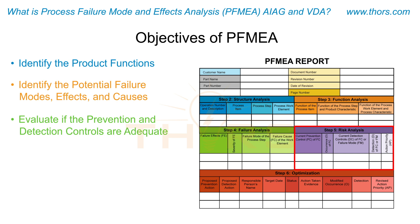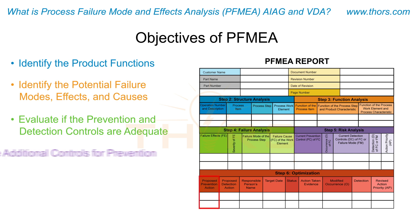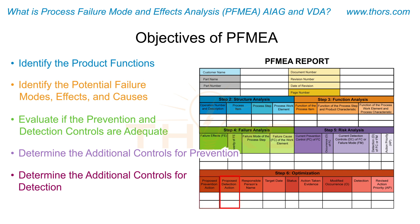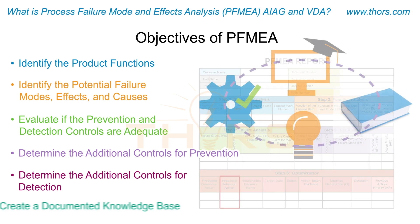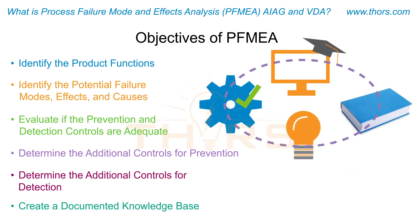If controls are not adequate, PFMEA aims to recommend additional actions, to determine additional controls for prevention — which is the desired approach — to determine additional controls for the detection of non-conformity if it occurs, and to create a documented knowledge base for future reference and employee training.